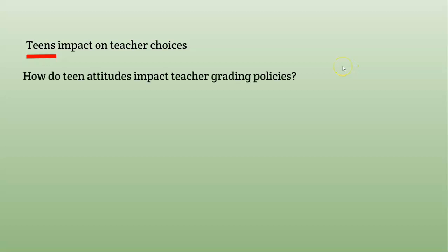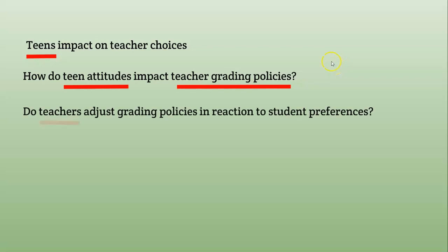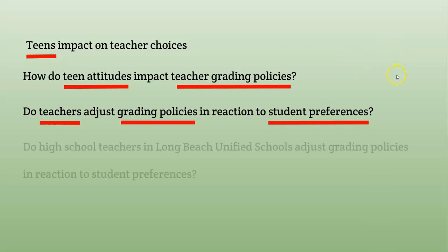Let's see what happens when we start to bring it in a little. 'How do teen attitudes impact teacher grading policies?' We're narrowing just a little bit, but still overly broad — this moves from a one into a two. I know we're talking about teen attitudes and teacher grading policies, but as a reader, it's still very broad. So: 'Do teachers adjust grading policies in reaction to student preferences?' A little better in language, but this becomes a yes or no question, and although narrowing, it doesn't really lead toward a meaningful investigation.